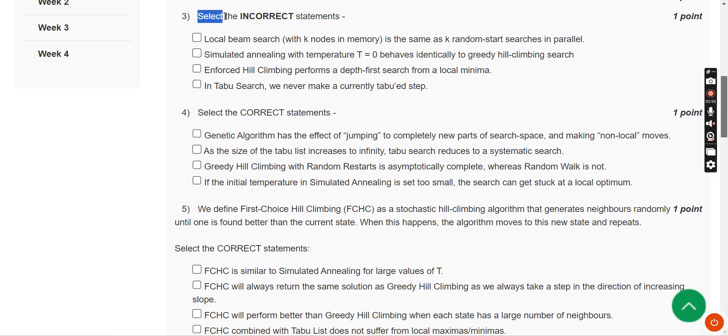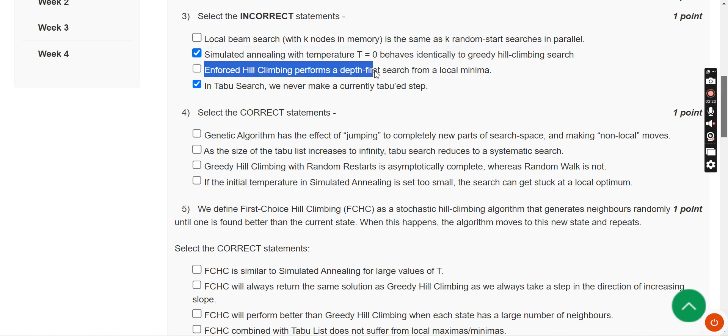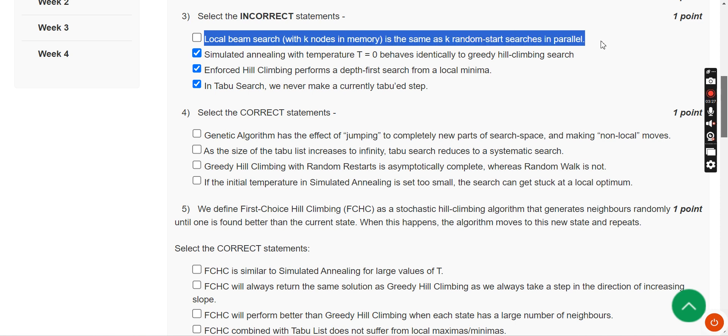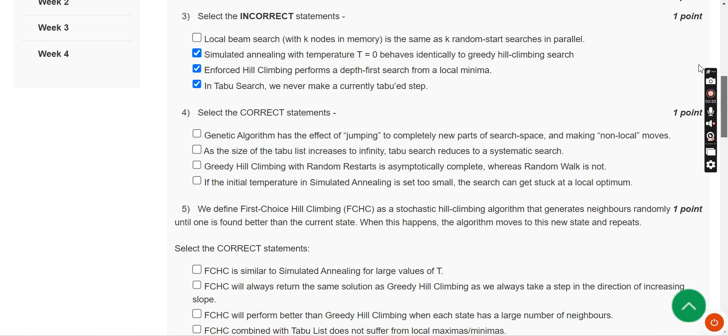Now for the third question, select the incorrect statements. I have got three solutions: last option—in tabu search we never make a currently taboo step; second option—simulated annealing with temperature T equals zero behaves identically to greedy hill climbing search; and third option—enforced hill climbing performs a depth-first search from a local minima. I got these three as incorrect options whereas the first one seems to be correct. I'm going with the last three options as incorrect statements.